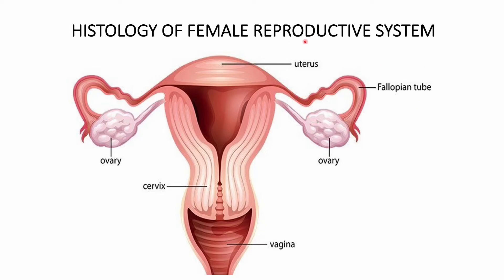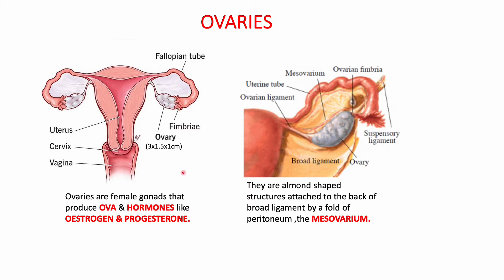Let us discuss the histology of the female reproductive system. The female reproductive system consists of a pair of ovaries, a pair of fallopian tubes, and a single uterus along with the cervix and vagina. We have two ovaries lying on both sides of the uterus. Each ovary measures about 3 × 1.5 × 1 centimeter. These are female gonads that produce ova and hormones like estrogen and progesterone. They are almond-shaped and attached to the back of the broad ligament by a fold of the peritoneum called the meso-ovarium.